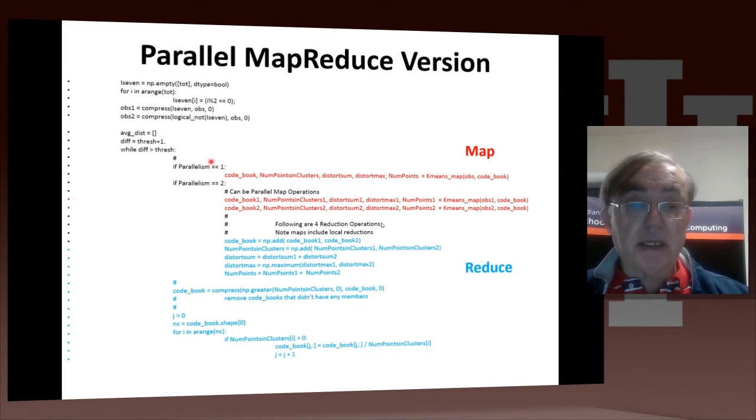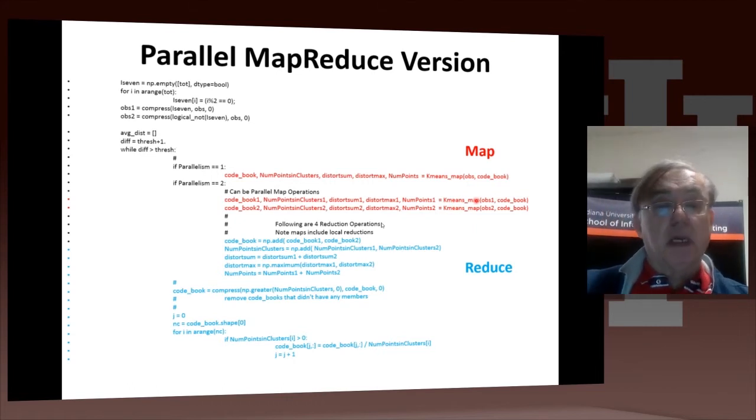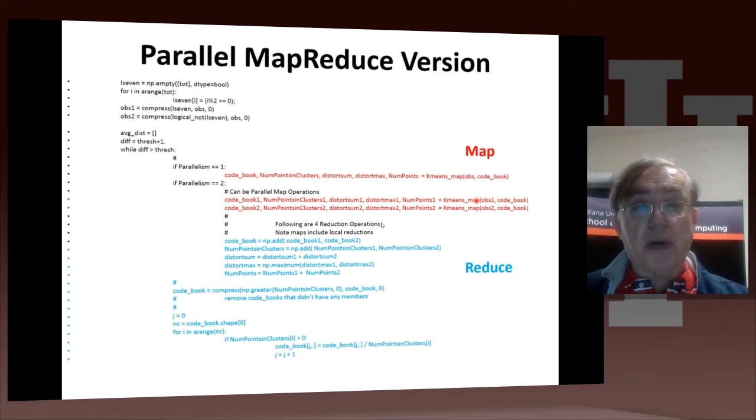We only set this up as an illustration for the two cases of parallelism 1 and parallelism 2. The interesting thing is we call the same function, kmeans_map, for 1 or 2. We just call it twice if the parallelism is 2. This is a general feature of parallel computing. When you are doing parallelism, you often run identical codes in each of the parallel processes. They get different answers because they're operating on different data.